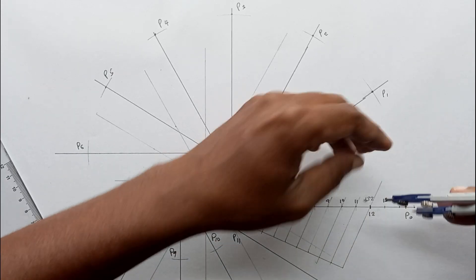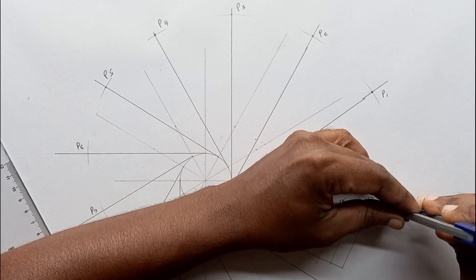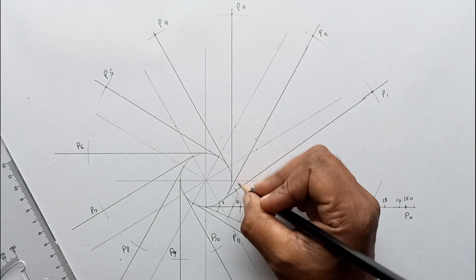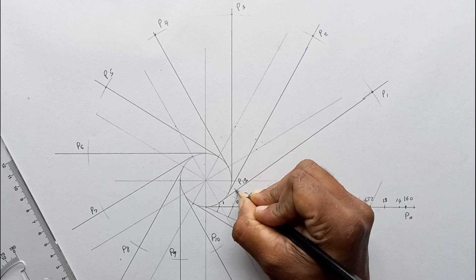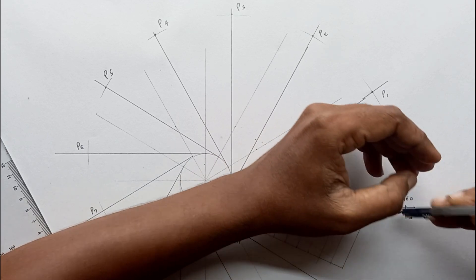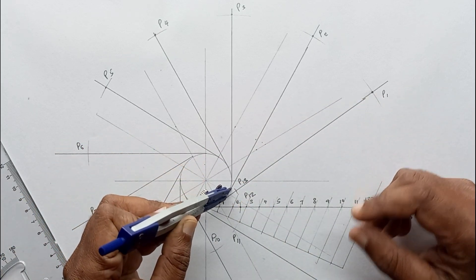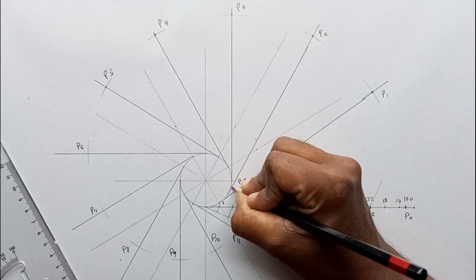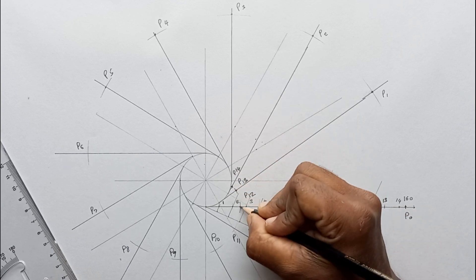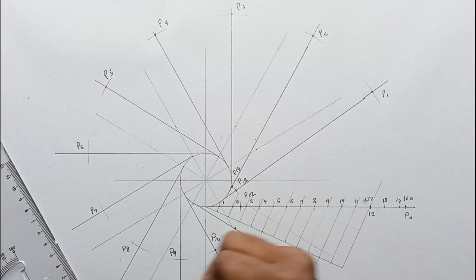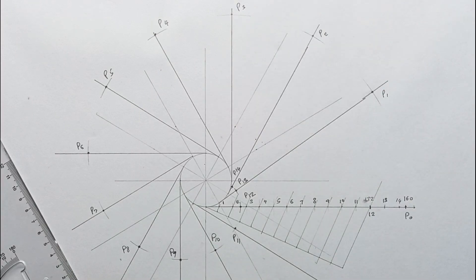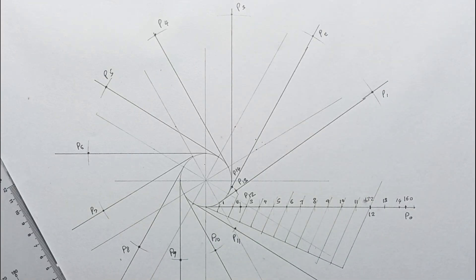Mark the P12 point, then P13. You can see that P13 and P1 are on the same tangent. For P14, mark this point. P14 is the point. Let us highlight these points: P10, P9, P8, P7, P6, P5, P4.